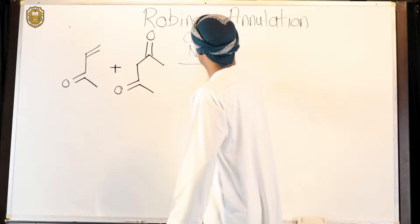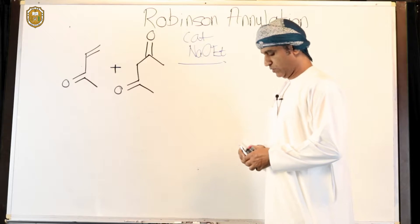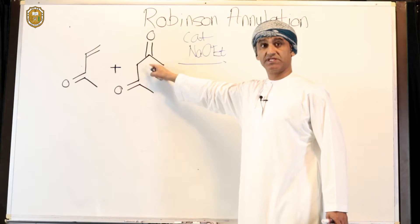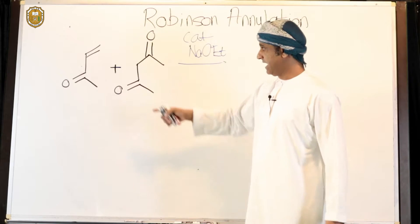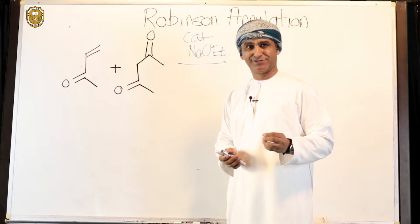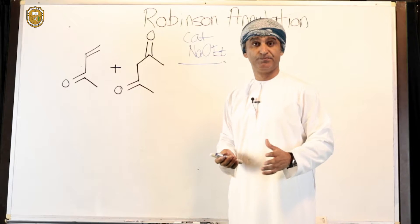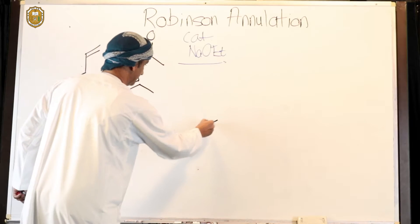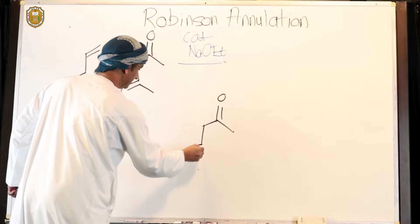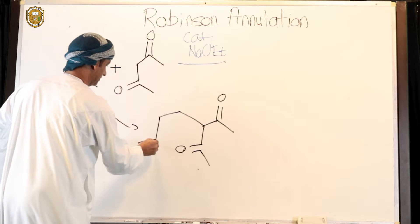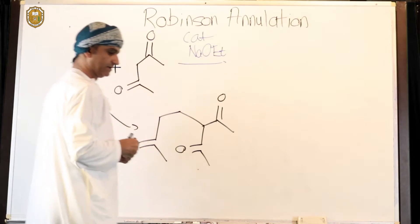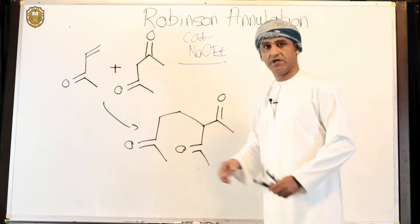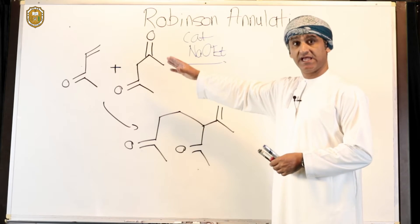such as catalytic sodium ethoxide. What will happen is that the catalytic sodium ethoxide will make an enolate from the 1,3-diketone, and the corresponding enolate then attacks the alpha-beta unsaturated carbonyl compound. This is Michael addition or 1,4-addition, and the initial product obtained is this 1,5-diketone. This is Michael addition so far.